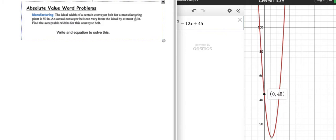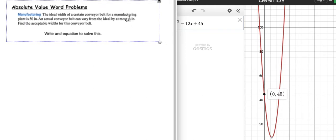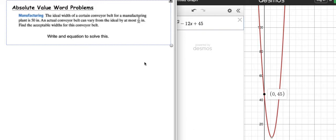Then, the next kind of question that we're going to look at, is we're going to look at absolute value word problems. And sometimes people make these a whole lot harder than they need to be. So, we're going to look at this absolute value word problem, because when you're doing these questions, you could actually figure out the answers without writing an equation. But, I do want you to write an equation for this. So, it says manufacturing. So, this is a manufacturing problem. And so, the ideal width of a certain conveyor belt for a manufacturing plant is fifty inches. An actual conveyor belt can vary from the ideal by, at most, seven thirty-seconds of an inch. Find the acceptable widths for this conveyor belt.